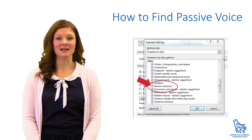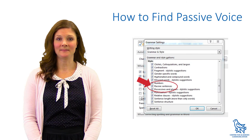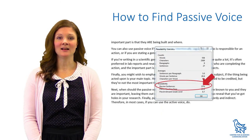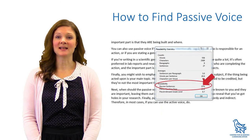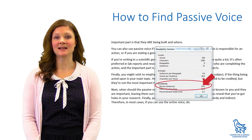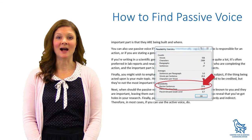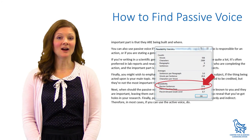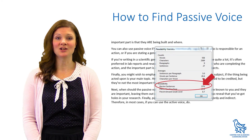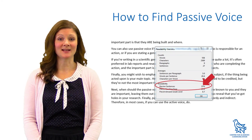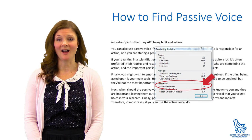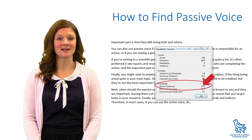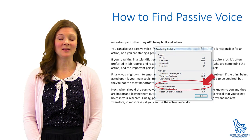Word will then begin flagging passive sentences with an underline. When you run a final spelling and grammar check, you'll end up with a set of readability statistics, which tells you your percentage of passive voice sentences. I've checked this script and my percentage is 37%, which is quite high. If you're not writing about passive voice, this number should probably be lower.